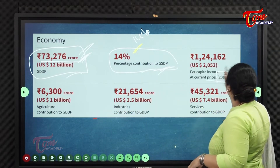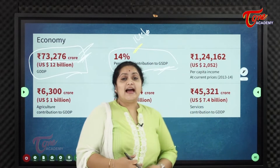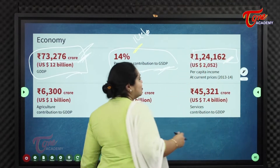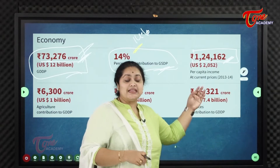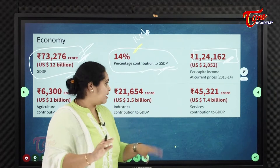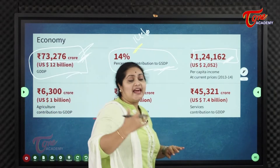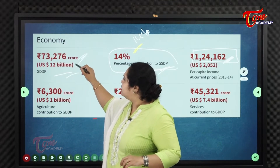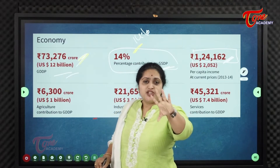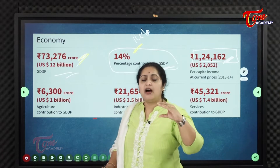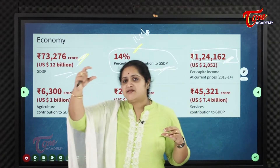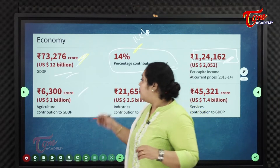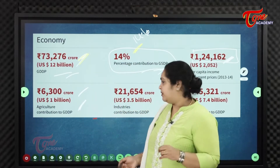Looking at sector-wise contributions to the district GDP of 73,276 crores: the agriculture sector contributes 6,300 crores, while the industrial sector contributes a much higher 21,654 crores, reflecting the many industries in the district.